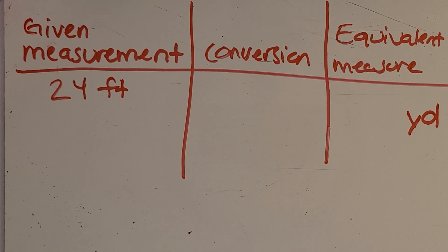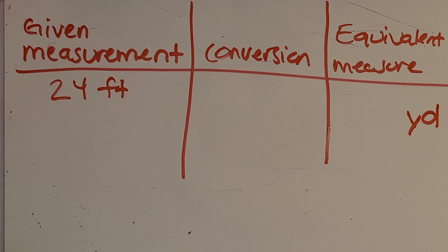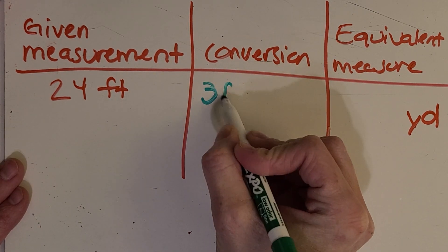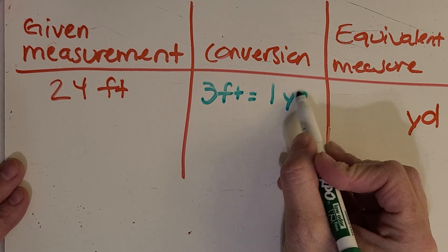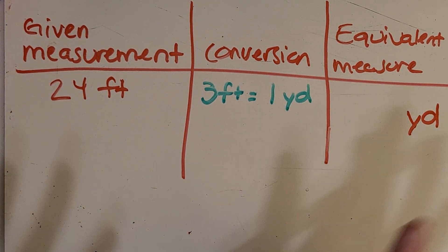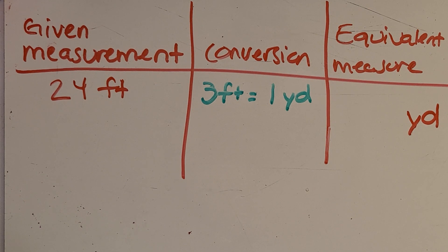The next thing you ask yourself is: what do you know about feet and yards? Some of you might have it memorized, some may not. One great thing about converting is that you usually either have a conversion chart from your teacher or you can look it up online. So if you have a conversion chart, you know that three feet equals one yard — and that's going to be super important for this problem.